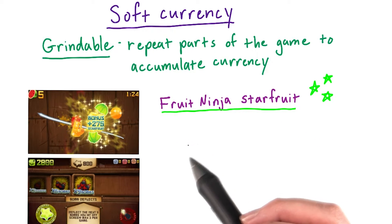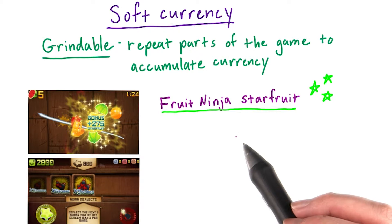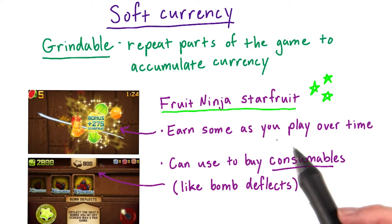One example of this is Fruit Ninja's Starfruit currency. Players accumulate starfruit over time as they play the game. And once they save up enough, they can use these starfruits to buy consumables, like bomb deflects or game power-ups.